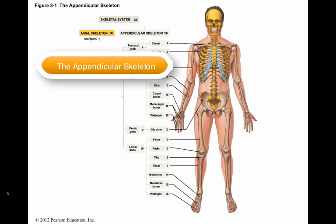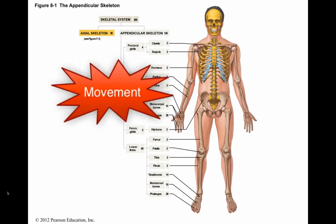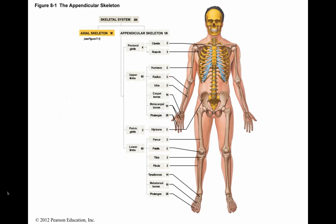The appendicular skeleton includes the bones of the limbs and the supporting elements or girdles that connect them to the trunk. The appendicular skeleton allows you to stand, walk, write, turn pages, eat, dress, shake hands, wave, and any other things you do with your arms and legs.